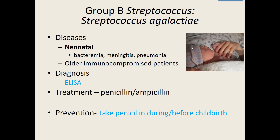Streptococcus agalactiae is not an extremely common bacteria. Most of the time we see it causing issues with newborns, so a lot of the diseases are usually diagnosed as neonatal diseases. This bacteria can get in the bloodstream and cause bacteremia, get into the cerebrospinal fluid and cause meningitis, or get into the lungs and cause pneumonia. It affects about three births out of every thousand, which is still a decent number. It can also cause issues with older immunocompromised patients.